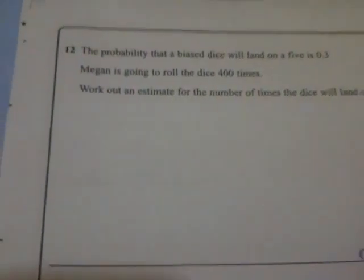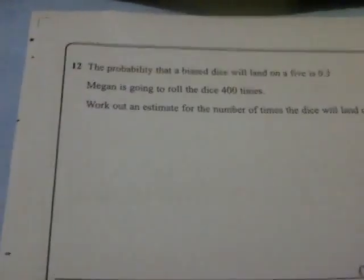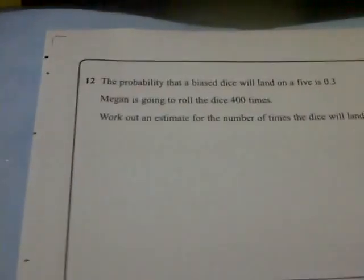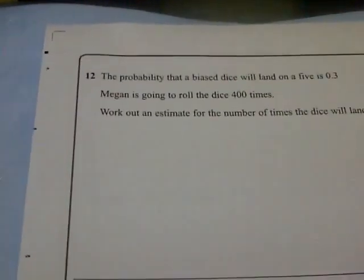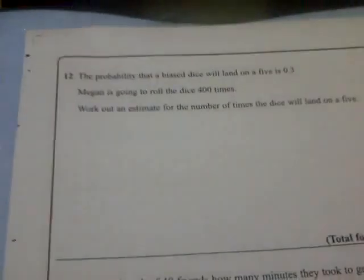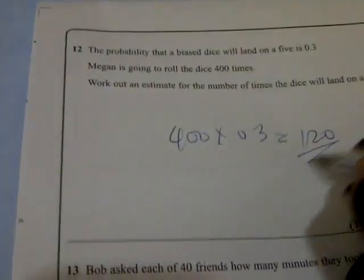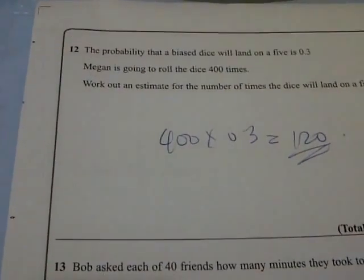Question 12 says the probability that a biased dice will land on a 5 is 0.3. Megan is going to roll the dice 400 times. Work out an estimate for the number of times the dice will land on 5. To find that, you just do 400 times 0.3, and you get 120. So that's probability.